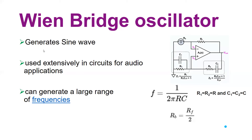Welcome back to our channel. We continue our discussion with the explanation of oscillator circuits. An oscillator is a circuit without any external signal source that can generate a variety of waveforms such as sinusoidal, square, triangular, and sawtooth waveforms at a desired frequency. Oscillator circuits in electronics can be built using bipolar junction transistors, field effect transistors, or operational amplifiers.